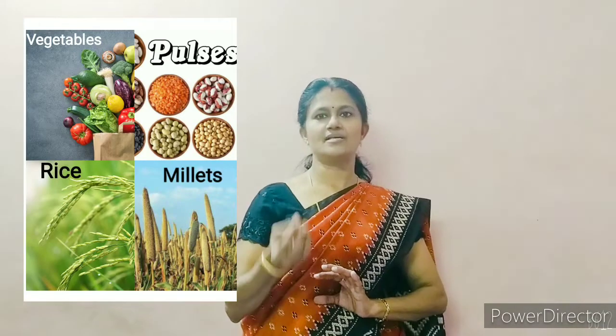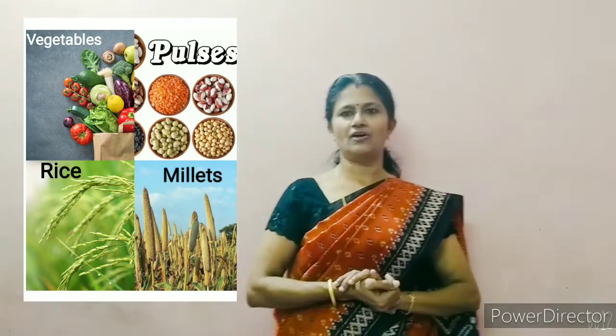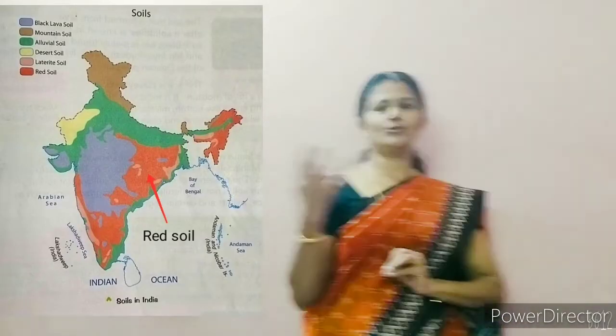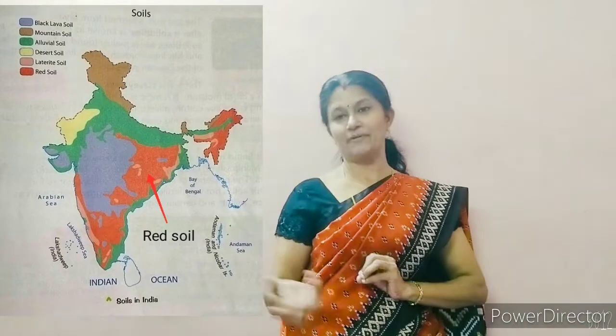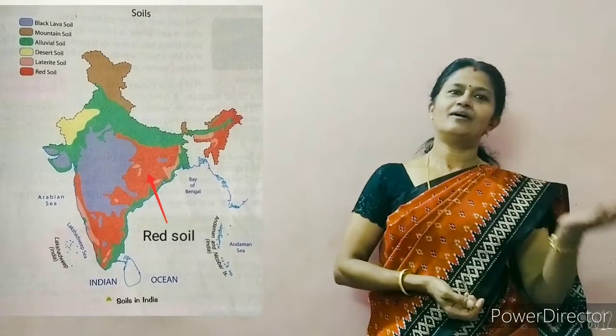Red soil is very fertile. It is good for cultivating pulses, rice, then vegetables etc. It is mainly found in Jharkhand, Uttara, Madhya Pradesh, then Maharashtra, Odisha etc.